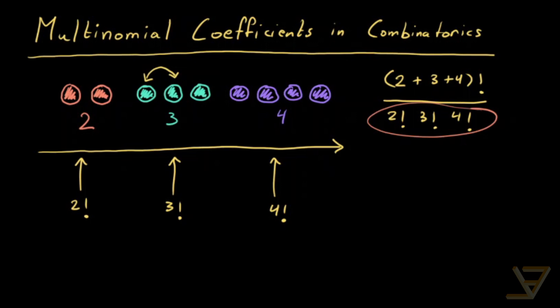The numerator is the number of permutations we'd have if all of the elements — all the 4 plus 3 plus 2 elements — were distinct. But they're not distinct, so we have to divide by the degree of symmetry.